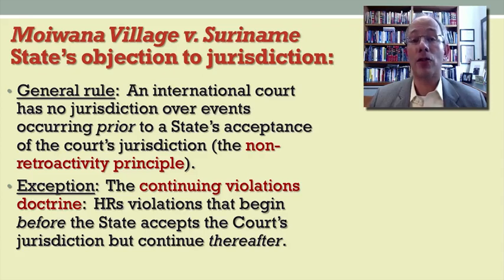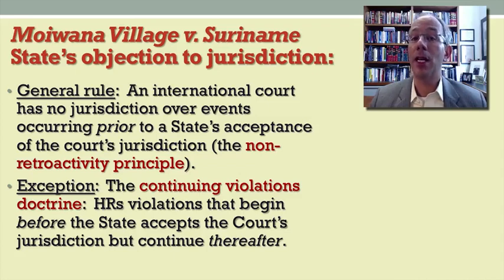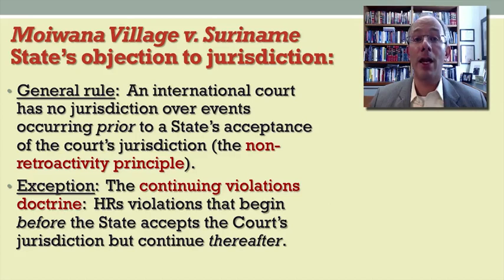This doctrine says that if a human rights violation began before the state had accepted the court's jurisdiction but continued thereafter, it might fall within the scope of the court's authority, notwithstanding that the entire series of events did not fall within the time period that the state had accepted the court's jurisdiction.